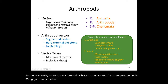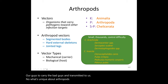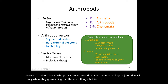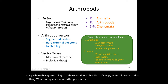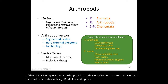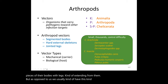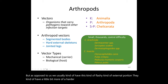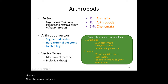The term 'arthropod' means segmented or jointed legs — these are creatures that creepily crawl all over you. What's unique about all arthropods is that they usually come in two or three body pieces with legs extending from them. Unlike us with our fleshy exterior, they have a harder version of protection on the outside called an exoskeleton.